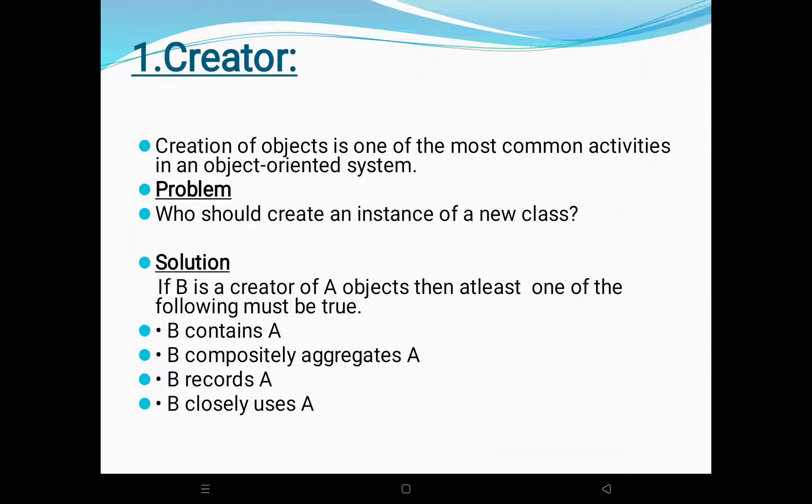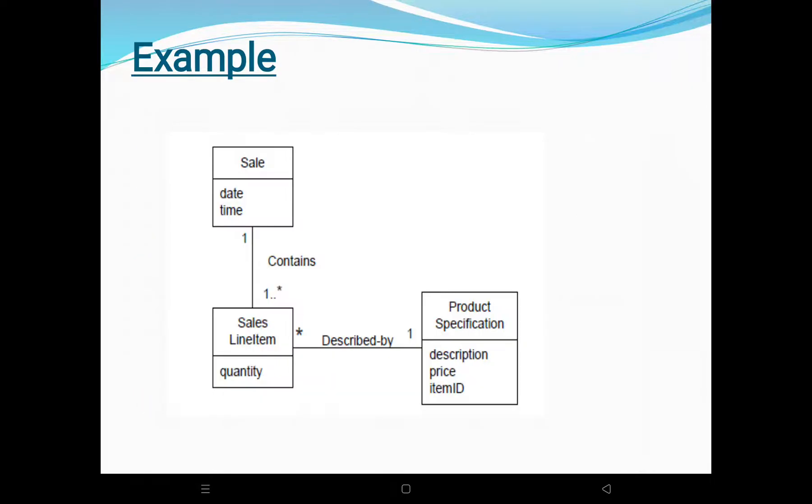So who should create the instance of a new class? For example, if B is the creator of an A object, at least one of the following must be true: B contains A, B aggregates A, B records A, or B closely uses A.